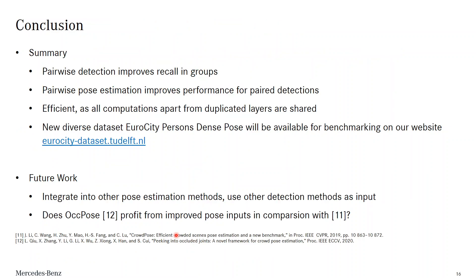We have presented our new Simple PairPose method that combines pairwise detection and pairwise pose estimation. The pairwise detection, adopted from the set detection idea, improves recall in groups, which is crucial for full pose estimation. We make use of pair detection to jointly estimate poses of front and back pedestrians, improving pose performance in these very challenging occlusion situations. Our pose network is very efficient, as apart from the duplicated layers all computations are shared. In the future, it would be interesting to integrate our approach with other detection methods optimized for dense urban scenes and to use our pose approach in combination with the graph convolutional network of OCPose. Finally, our new EuroCity Persons Dense Pose dataset will be available on our website and hopefully will lead to further advances in this exciting field.